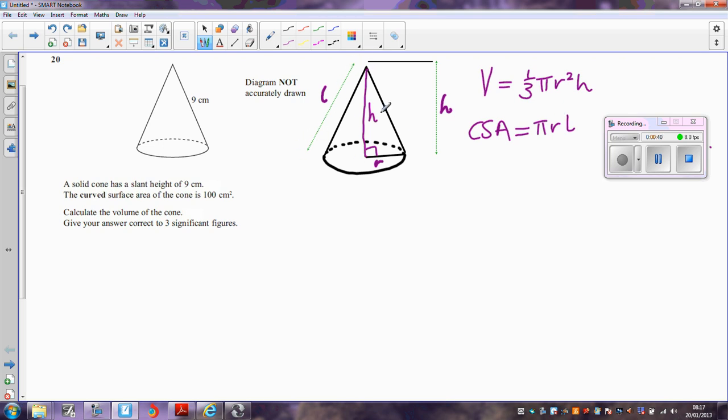Now the slant height of a cone is the same wherever you are on the cone, the distance from the top vertex here down to the base. And l is most useful put here because we can now use this right angle triangle.